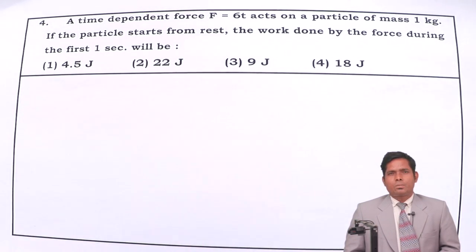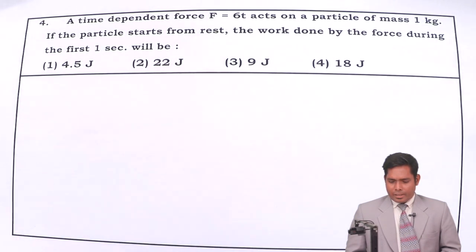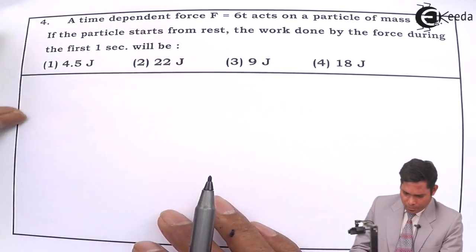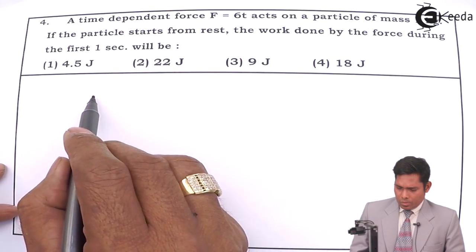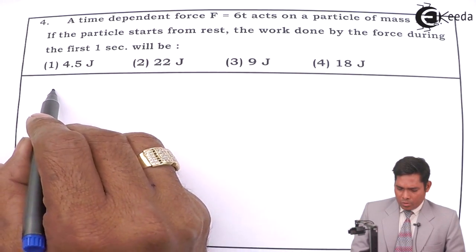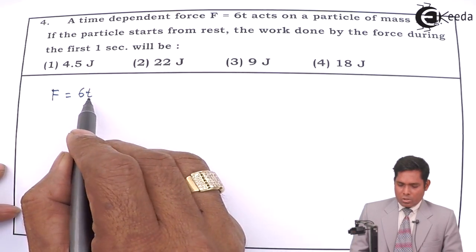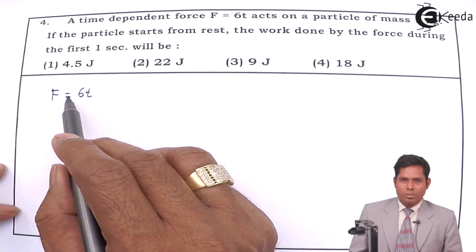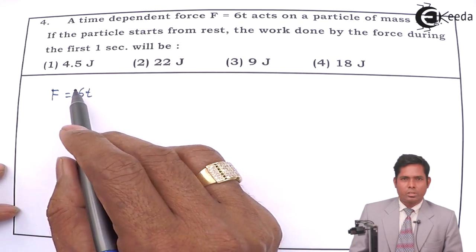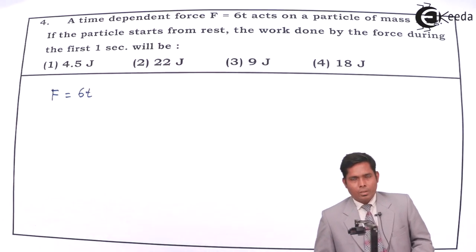Now students let us move to the next question, question number four. This question says that a time-dependent force F equals 6t acts on a particle of mass one kilogram. So there is a time-dependent force. As you change t, the force will change. That means at t equals zero, the force is zero. At t equals one, the force is 6 Newton and so on. So that means it is increasing.